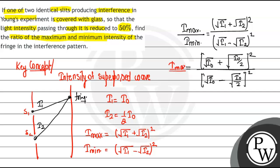So I_max upon I_min becomes (1 + 1/√2) divided by (1 - 1/√2), whole squared. This simplifies to (√2 + 1) over (√2 - 1), the whole squared.